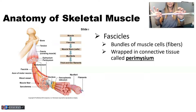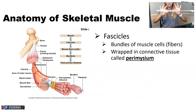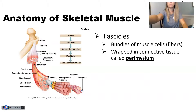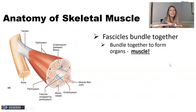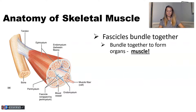At this point I've already made it much stronger than it was when I just had a single fiber wrapped in connective tissue. Then even the fascicles bundle together — they bundle together to form your individual organ, your whole skeletal muscle.